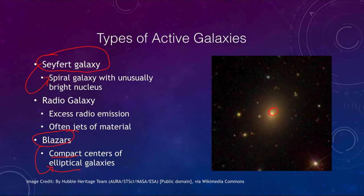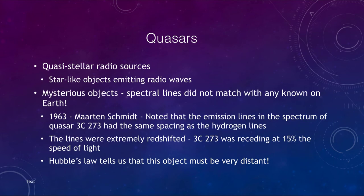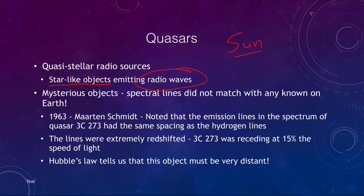The type we really want to focus on is quasars. Quasars are what we call a quasi-stellar radio source — they are essentially star-like objects, meaning they look like a point of light, but they are emitting radio waves. Our sun does emit radio waves, but we can only detect them because we are so close. An ordinary star within our galaxy we would never be able to detect emitting radio waves, so this was very mysterious.